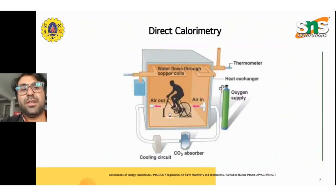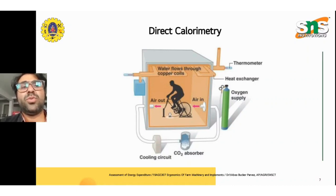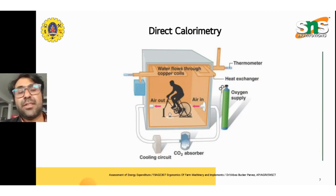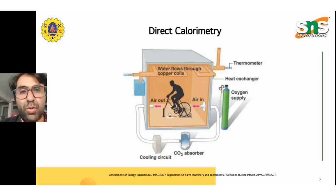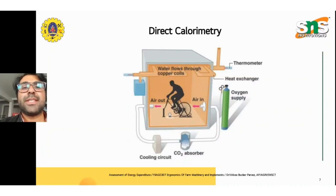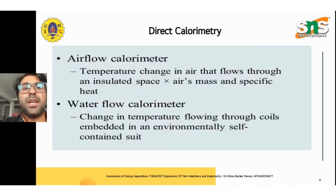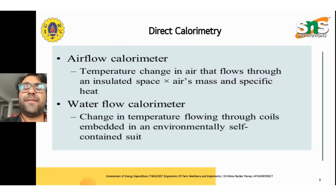Here is a pictorial representation of direct calorimetry. A person is kept inside a closed chamber, water flows through copper coils, a heat exchanger is placed, and a thermometer measures deviation in temperature. An oxygen supply is provided for the person, air is let in and out, and a carbon dioxide absorber is kept for the cooling circuit. This method of measuring energy assessment is called direct calorimetry.